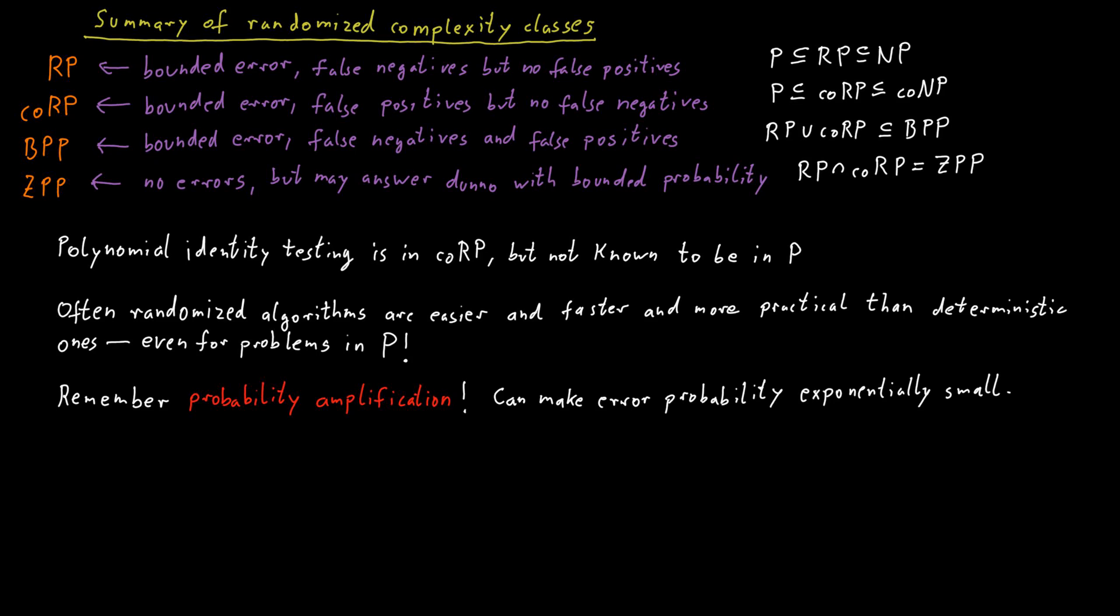Even for safety-critical systems, you might be able to use randomized algorithms. And the reason is that if you know what you're doing, you can make the error probability of this algorithm so small that it's much smaller than the probability that something else will go wrong with the safety-critical system.